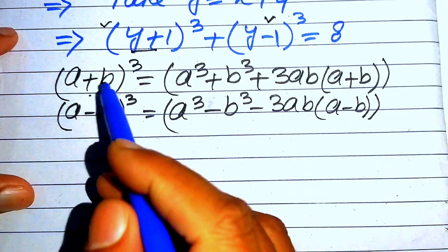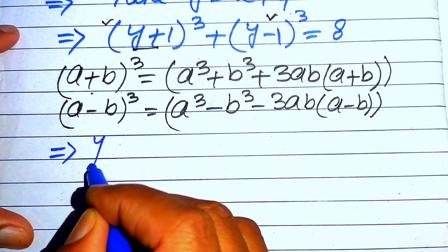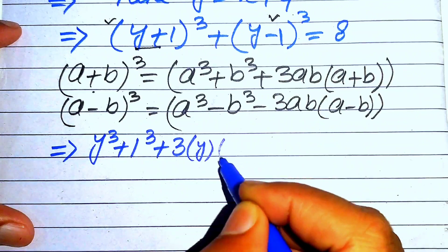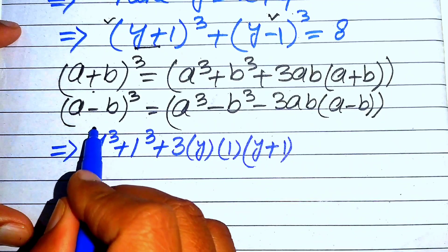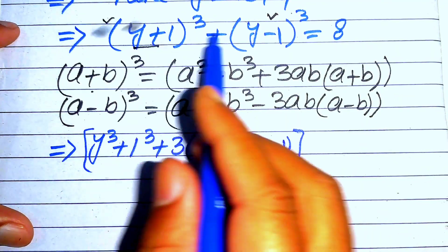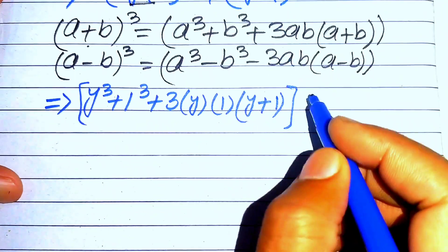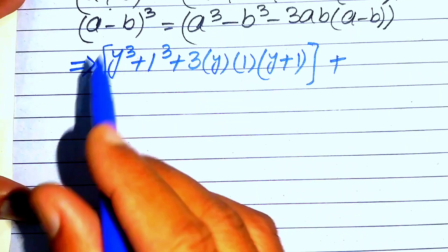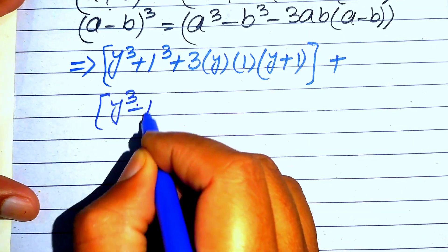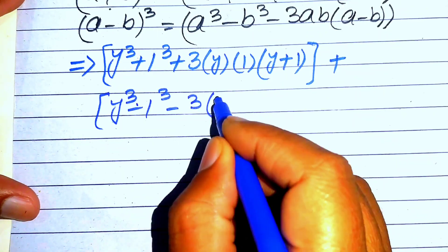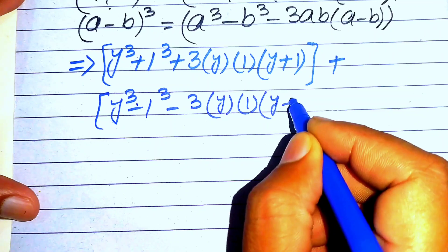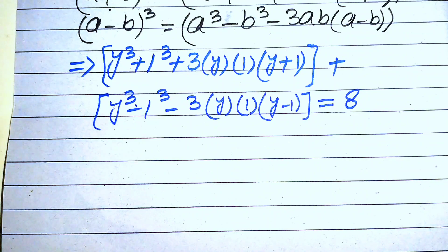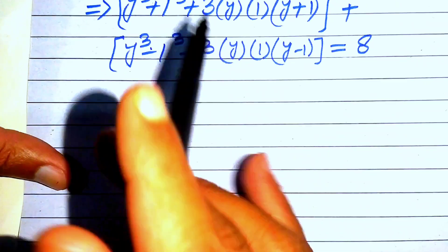Expanding the first term using the formula: y³ + 1³ + 3·y·1·(y+1). Expanding the second term: y³ − 1³ − 3·y·1·(y−1). This whole equation equals 8.